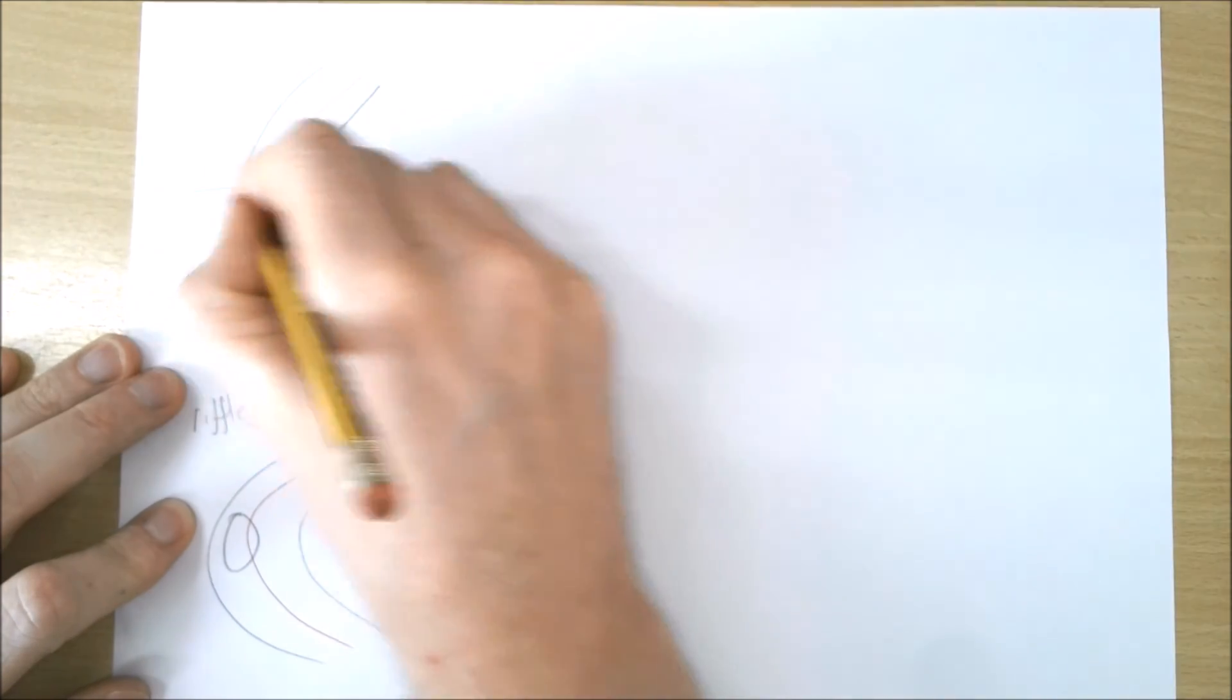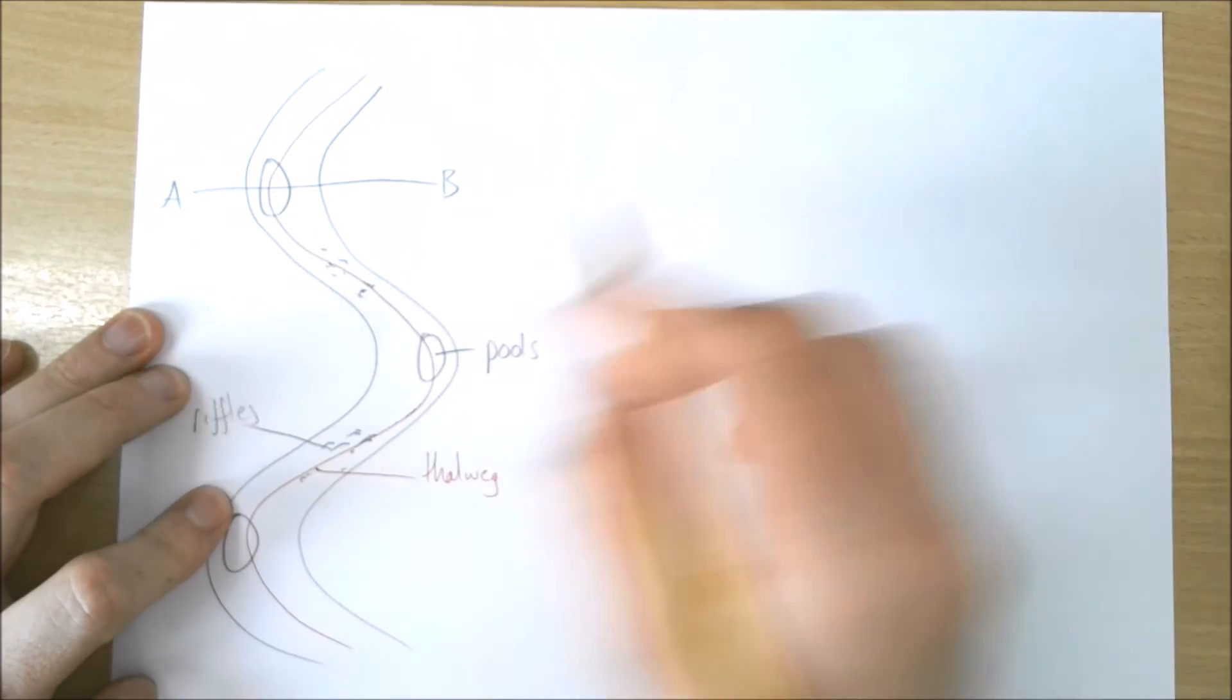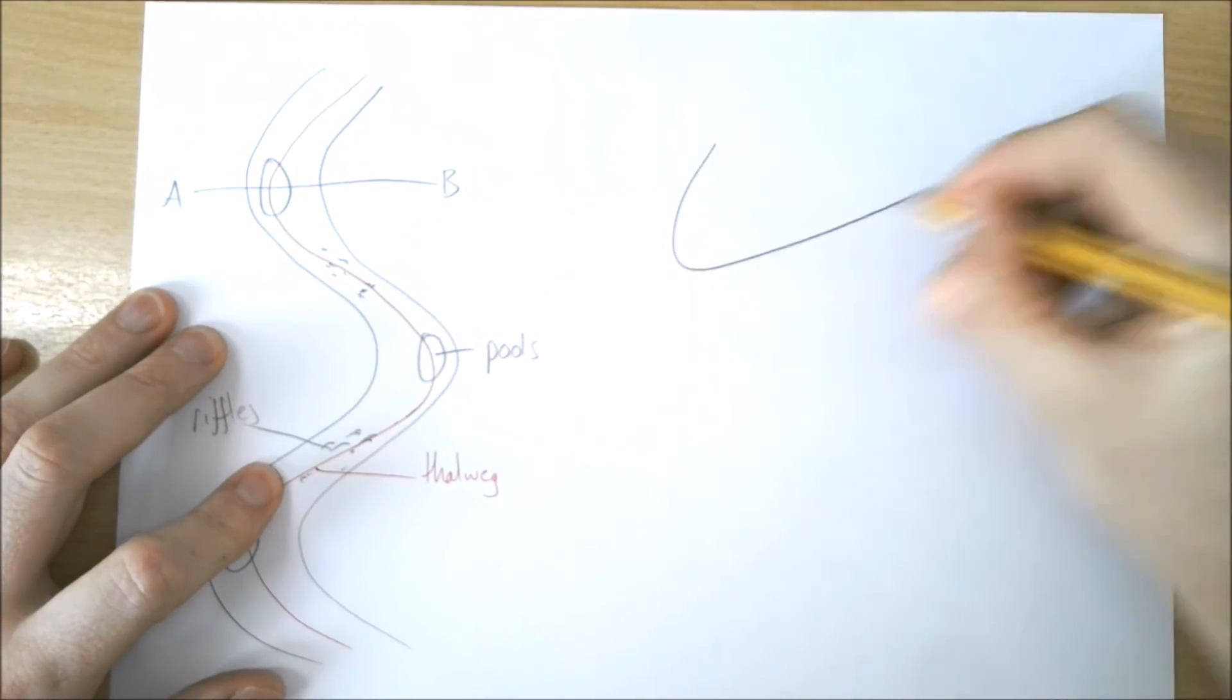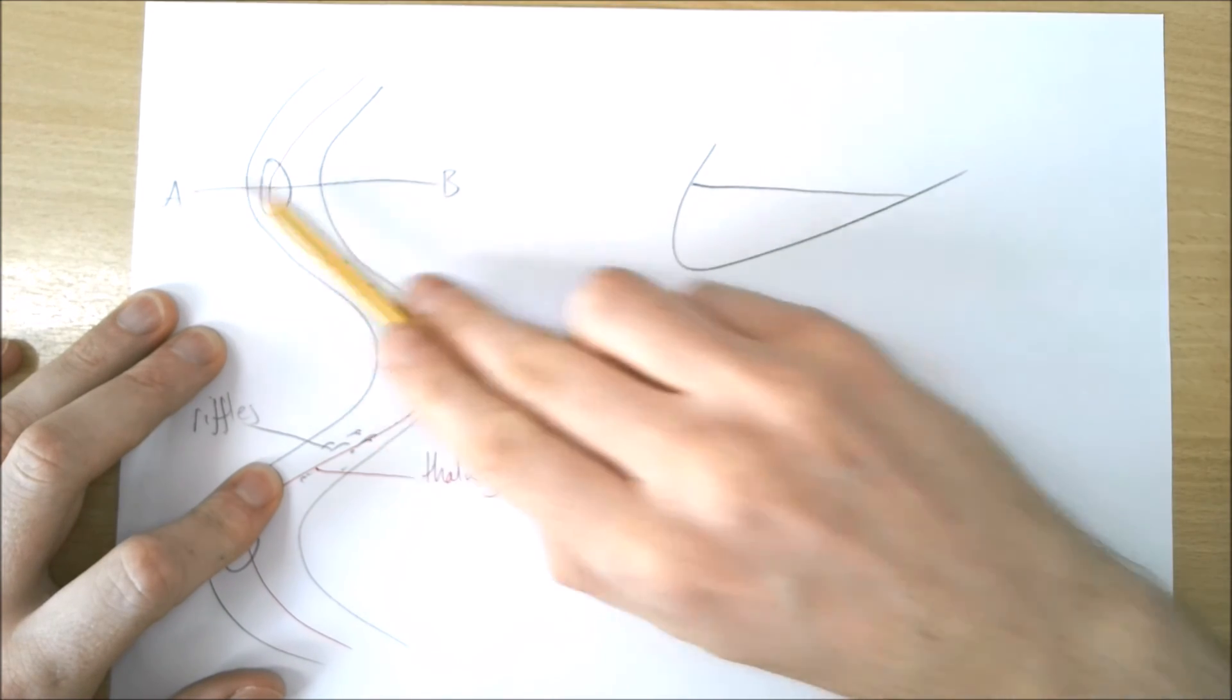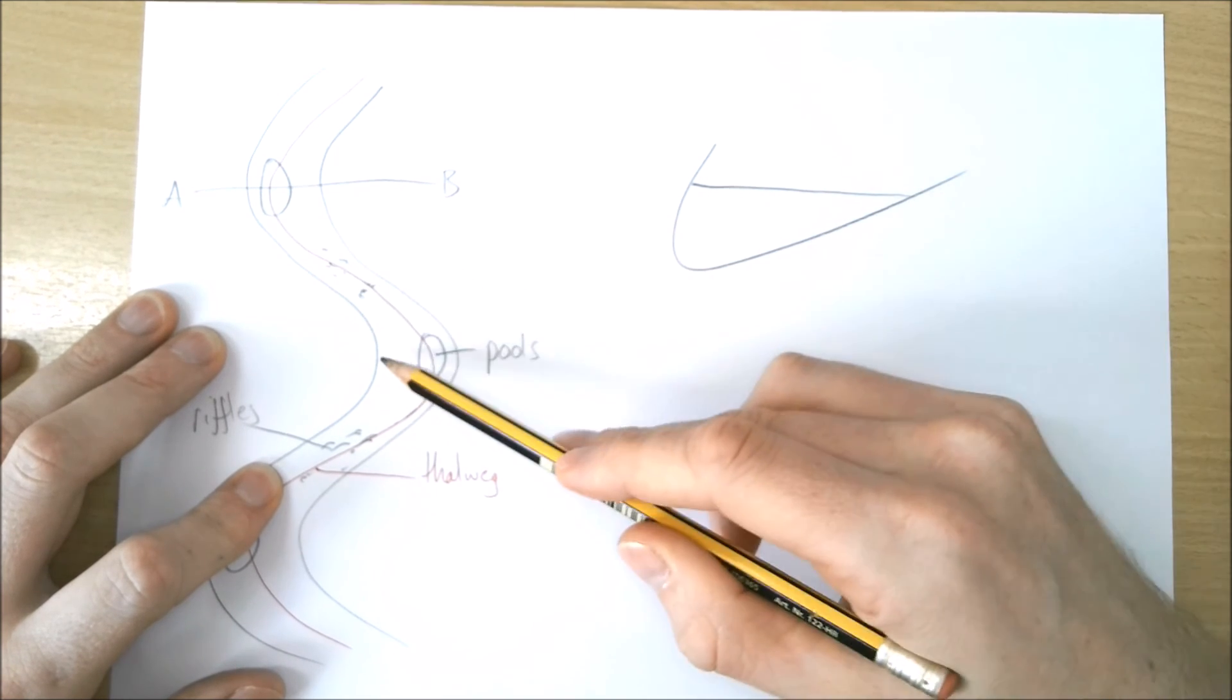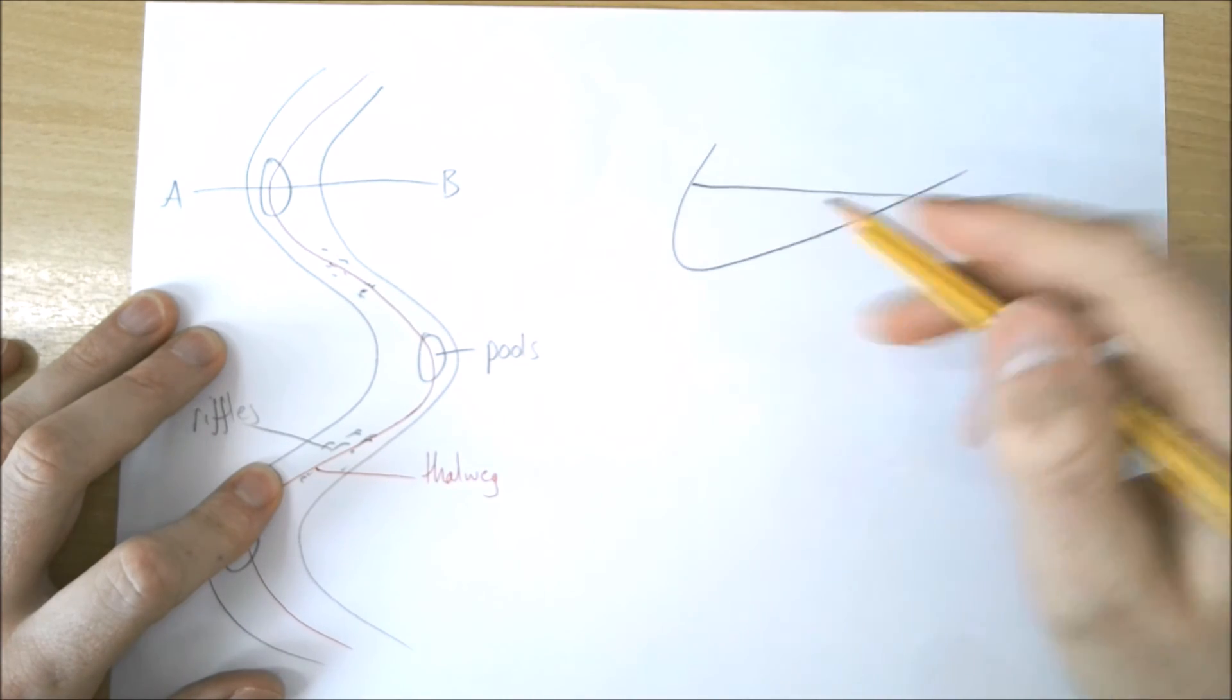We're then going to draw a cross-section. I always tell my students to draw a 90° tick. Be very careful—a 90° tick matches in this example because this is the outside of the meander. If in an exam they gave you a different meander, you'd have to reverse that tick shape.